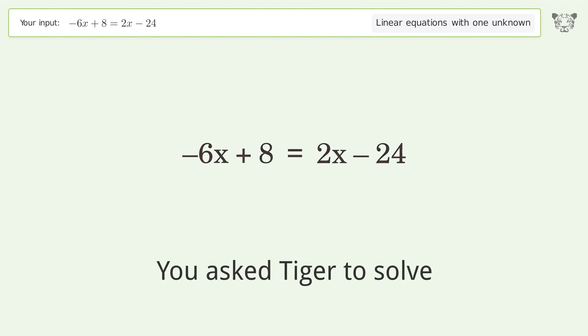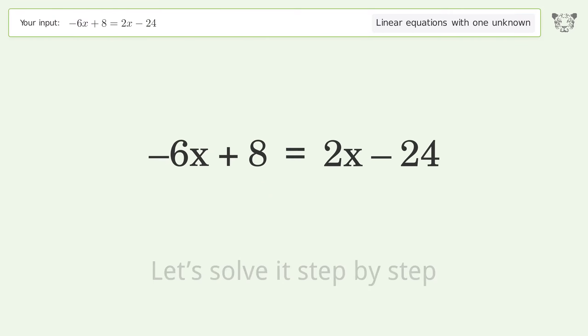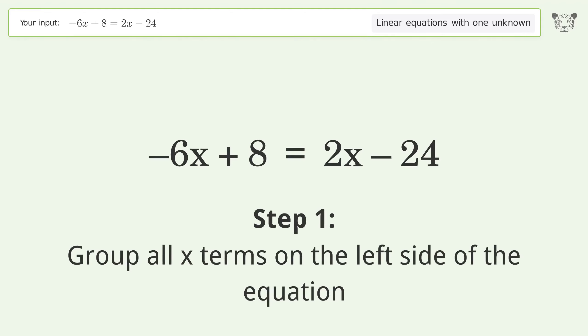You ask Tiger to solve this. This deals with linear equations with one unknown. The final result is x equals 4. Let's solve it step by step. Group all x terms on the left side of the equation.